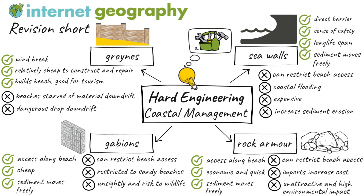A social disadvantage of groins is that they form a barrier which impedes people walking along a beach. Also, the beach on the downdrift side of the groin can be much lower than the updrift side, which can make them very dangerous, particularly for young children. An environmental disadvantage of groins is that they do not look attractive and they disrupt natural coastal processes.